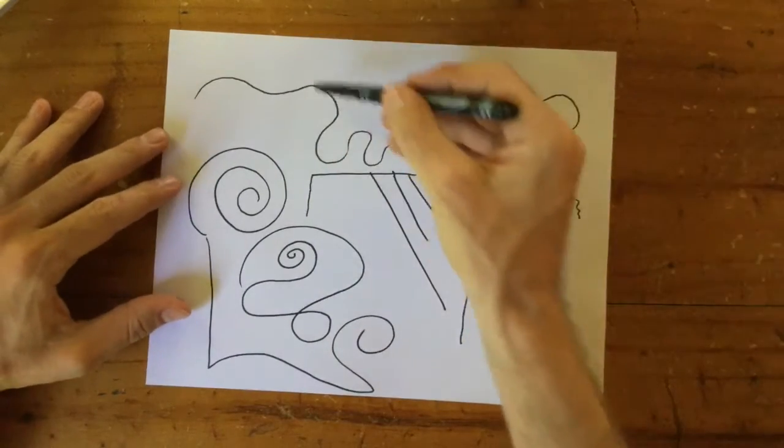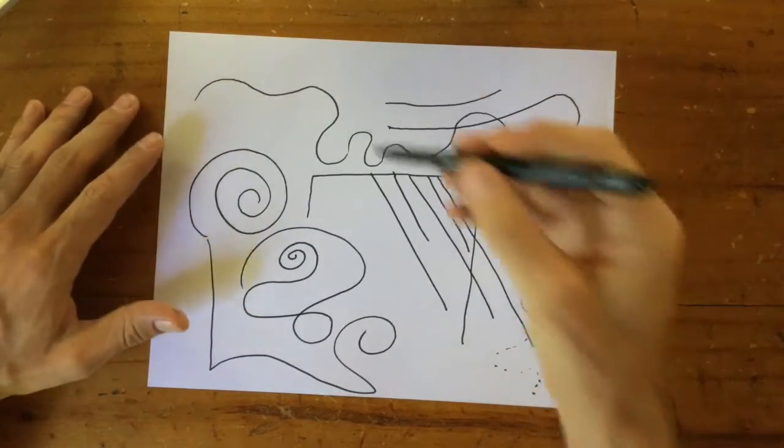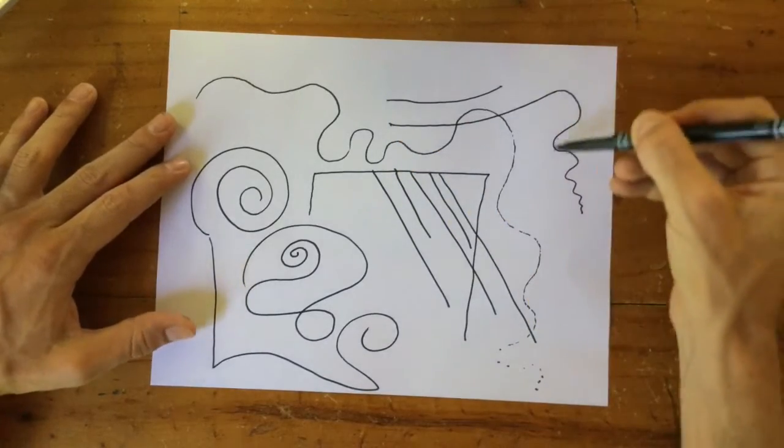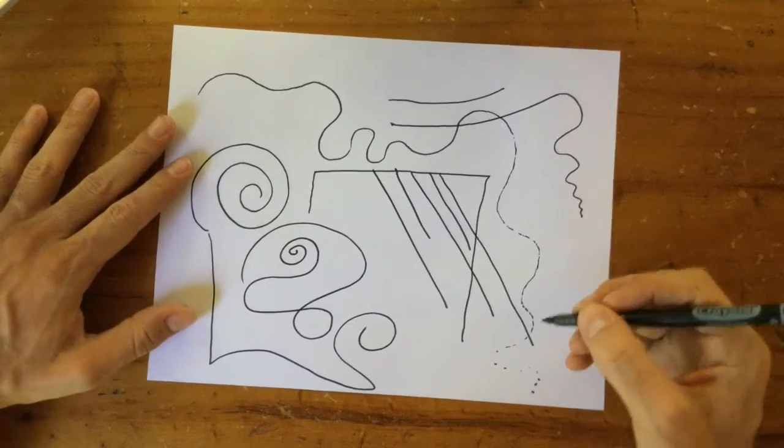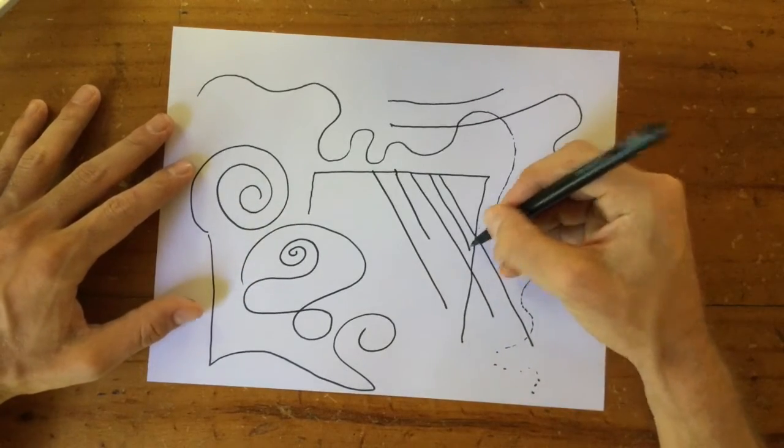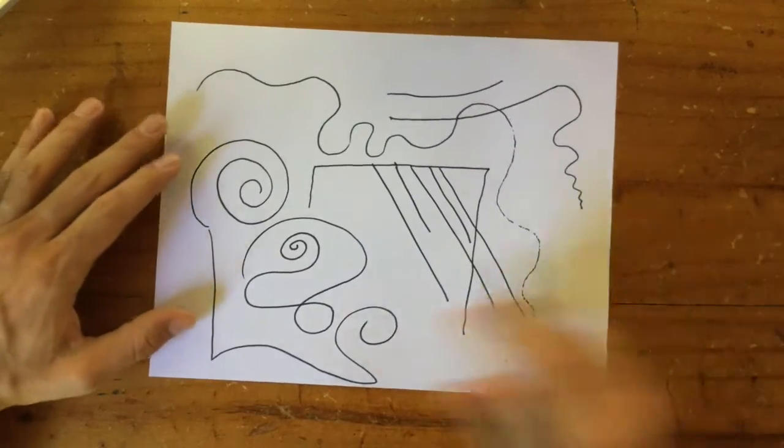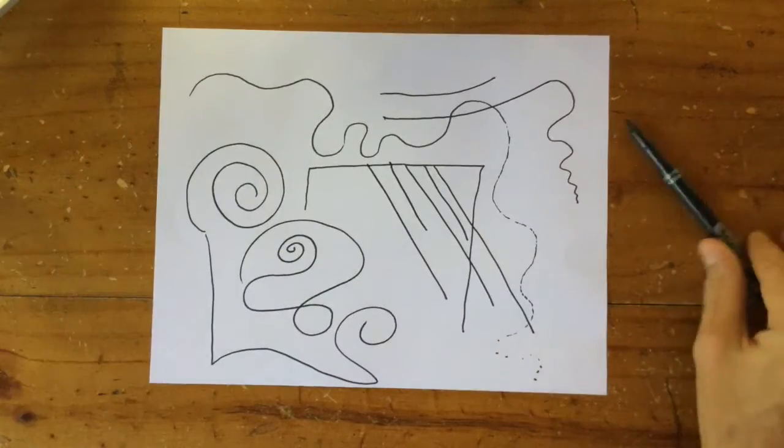So sometimes the lines that I draw are kind of responding to the quality of the sound. Sometimes the lines are just, I'm drawing lines for as long as certain sounds are lasting for. And I'm changing direction, doing straight lines and curving lines to make this abstract piece.